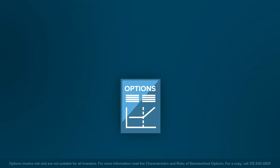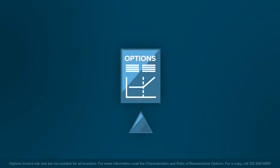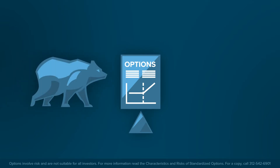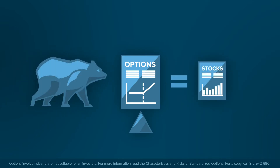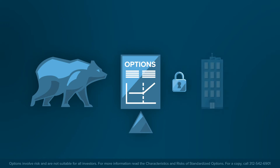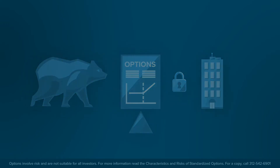Options provide investors with more leverage, and thus more risk, than is available with stocks given identical investments. Profits and losses are magnified. However, option holders, unlike shareholders, do not receive the underlying company's dividends or voting rights.